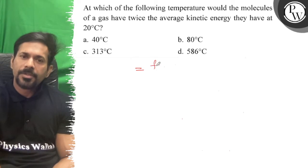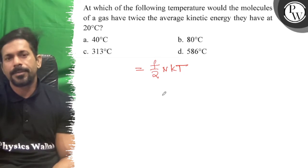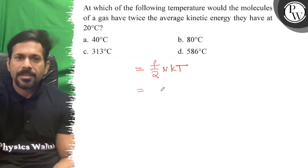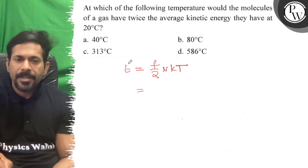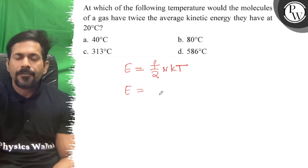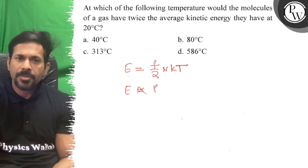So this is 3/2 nkT. That is equal to kinetic energy, 3/2 kT per molecule. That is your kinetic energy. So kinetic energy of molecules of gas have twice the kinetic energy at T.